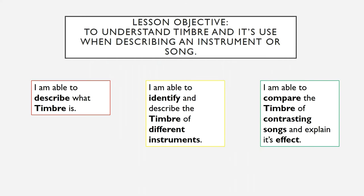For today's lesson we want to understand timbre and its use when describing an instrument or song. At the very least, in the red box on the left, I'm expecting you to be able to describe what timbre is. In the yellow box in the middle, you should be able to identify and describe the timbre of different instruments. And at the very best, in the green box on the right, you should be able to compare the timbre of contrasting songs and explain its effects.